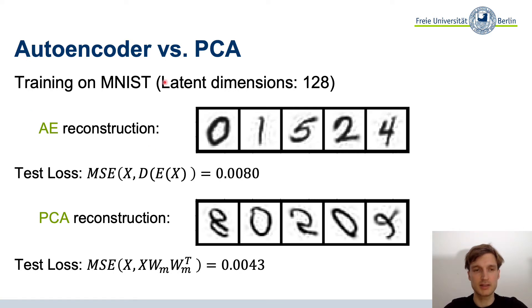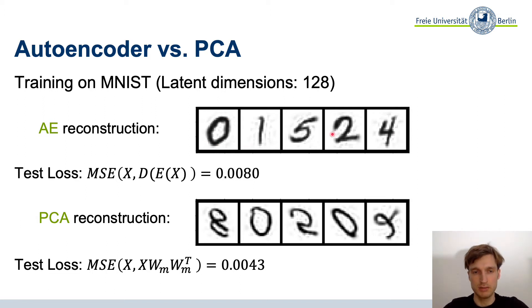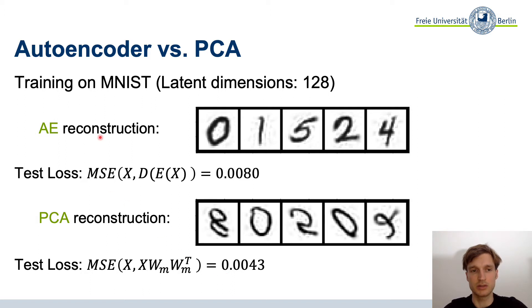I quickly did this with MNIST and compared both. I implemented a single-layer autoencoder, and both had 128 latent dimensions. The reconstruction of digits 0, 1, 5, 2, and 4 is quite good but looks a little blurry. The test loss is quite low for PCA, and the reconstruction looks almost similar — actually, the PCA reconstruction was even a little better than the autoencoder here. Obviously, we want to make things better than PCA with neural networks when we do deep learning.